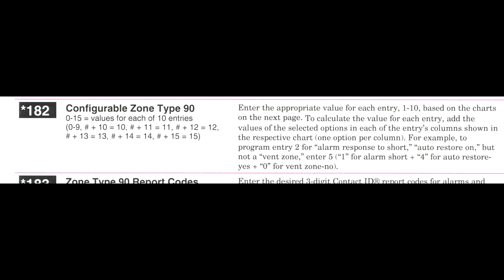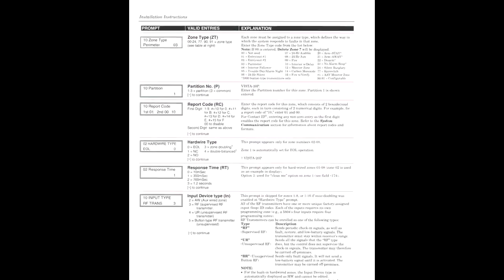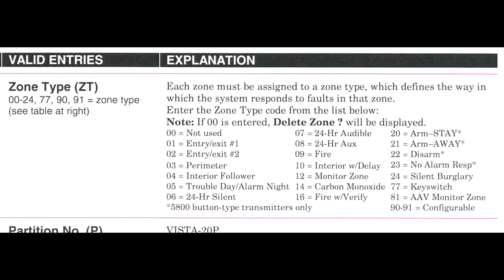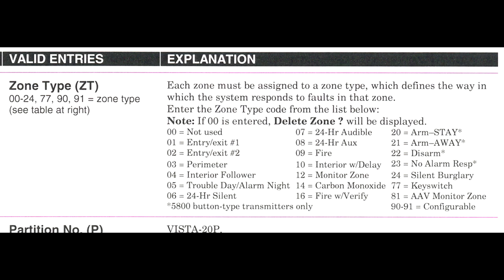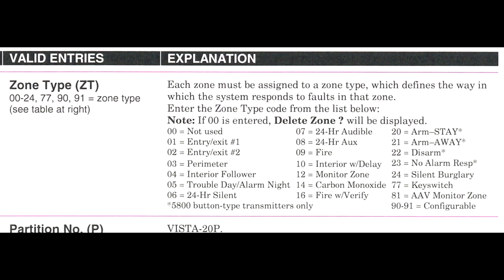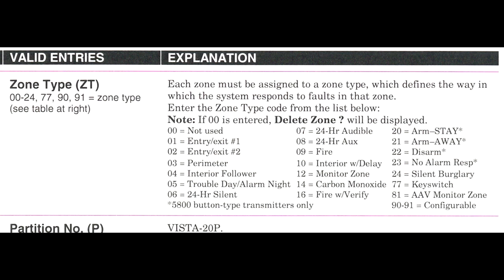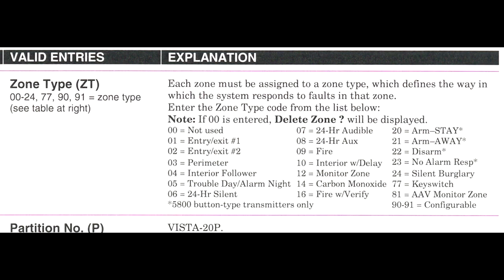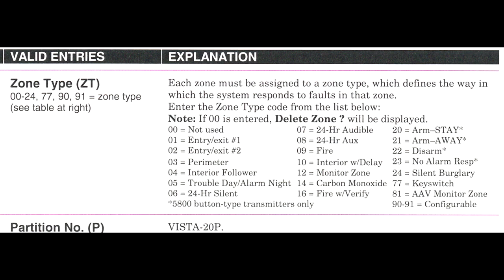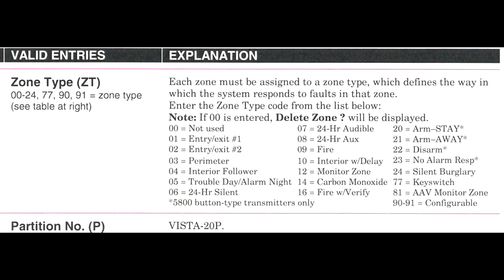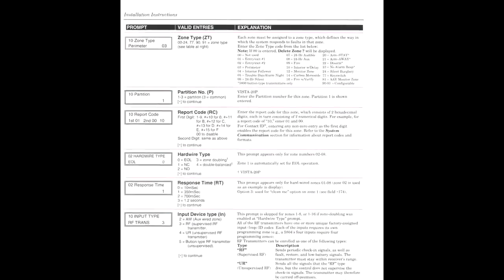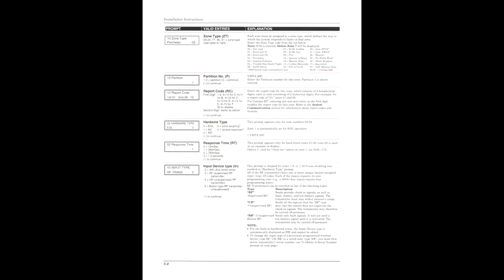You might ask yourself why the reason for programming a zone type from scratch. Let's take a look at the predefined zone types on our system. Thumbing over to page 5-2, we see the pre-programmed zones, entered into Star 56, which is zone programming menu mode. When one of these zone options does not fit into your plans for a specific zone, you are going to need to program a custom zone. This is done in Star 182 by programming a Type 90 zone.